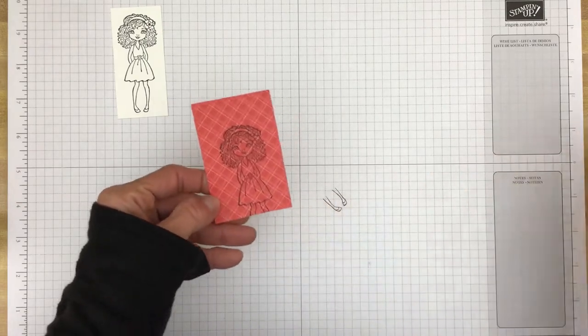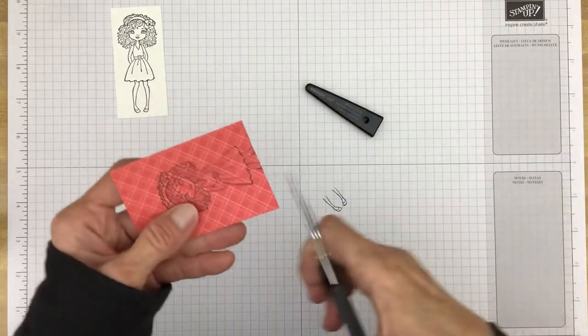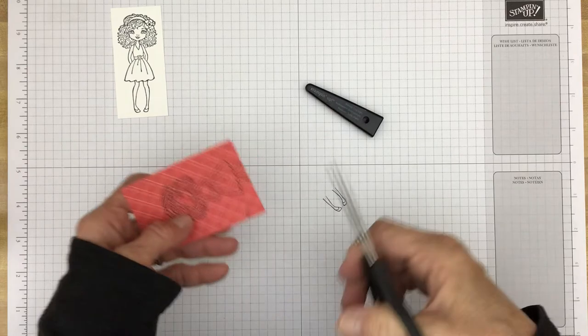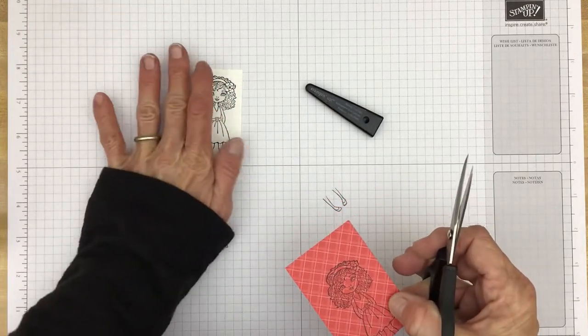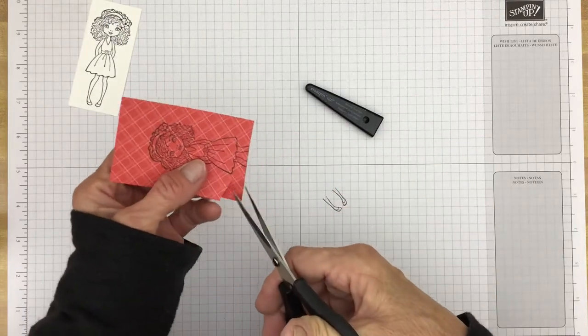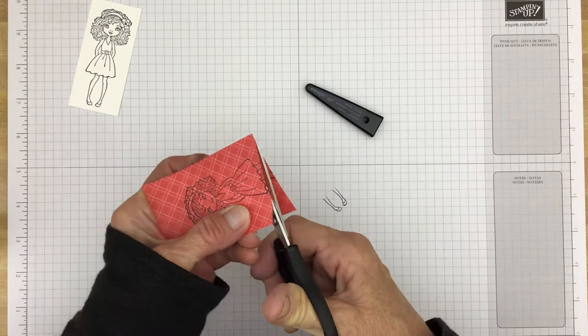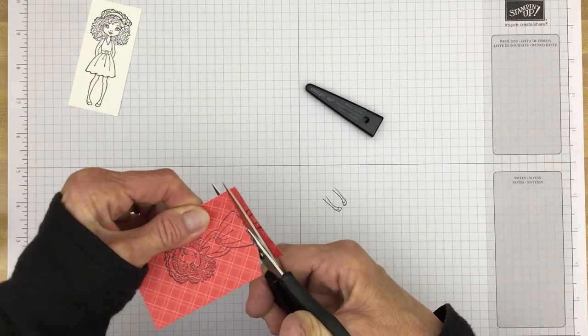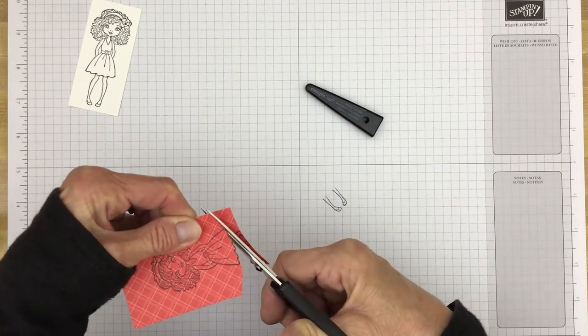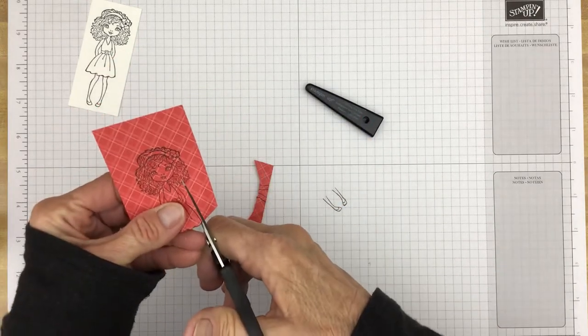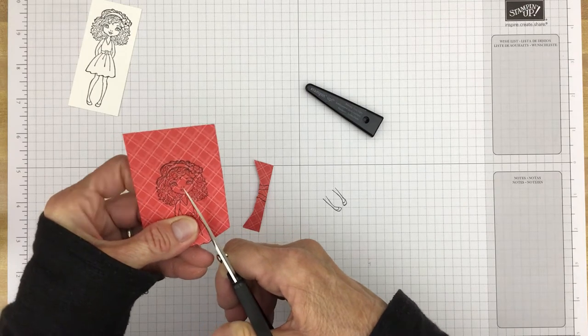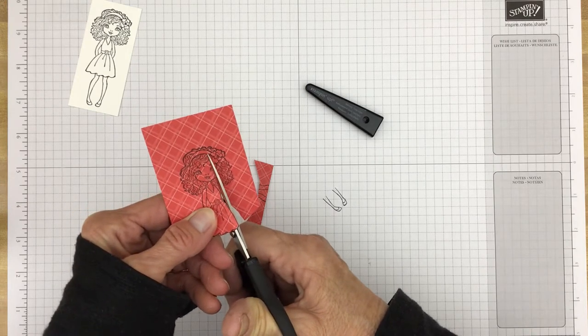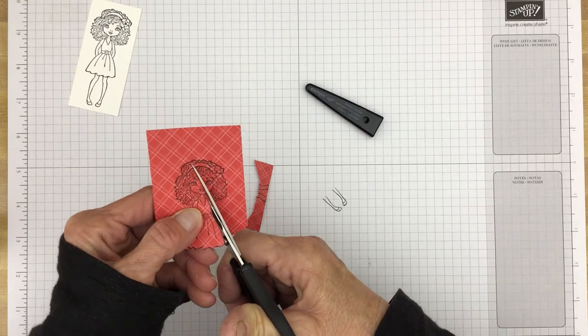Now all we need to do is fussy cut her dress. For this, because we're going to adhere it right to the image, we need to stay pretty close to the black line. Just go around, move your paper as you go, kind of makes it a little bit easier. I'm not great at fussy cutting. It's one of my goals this year to do more of it and so far I kind of like dies better, but this is a good technique to learn.